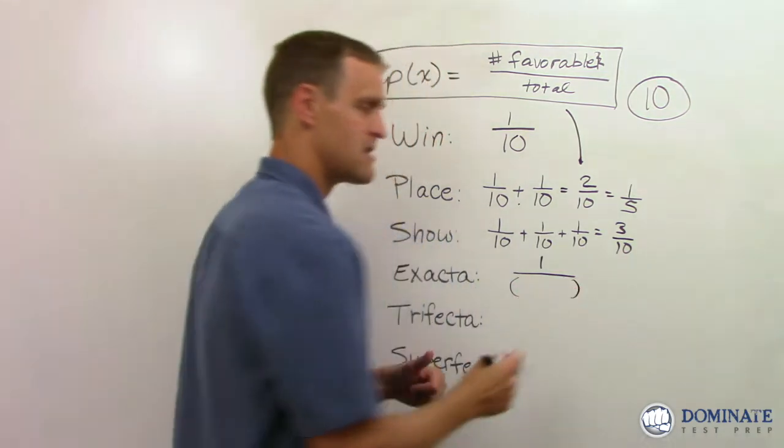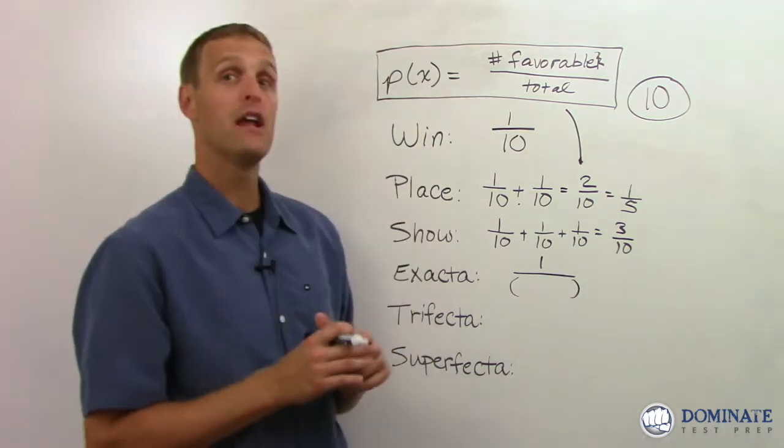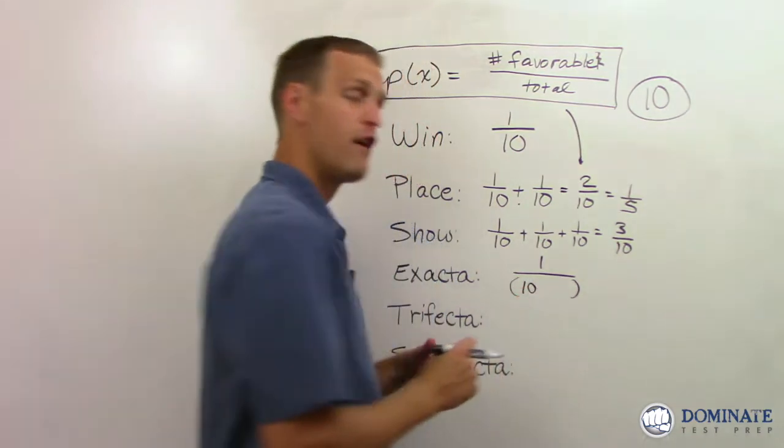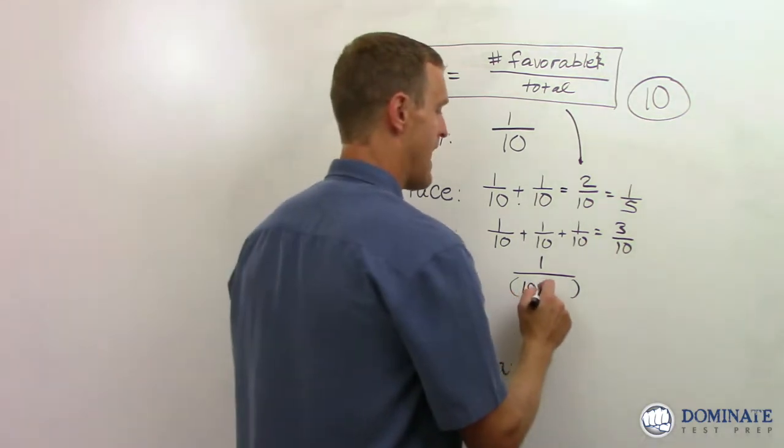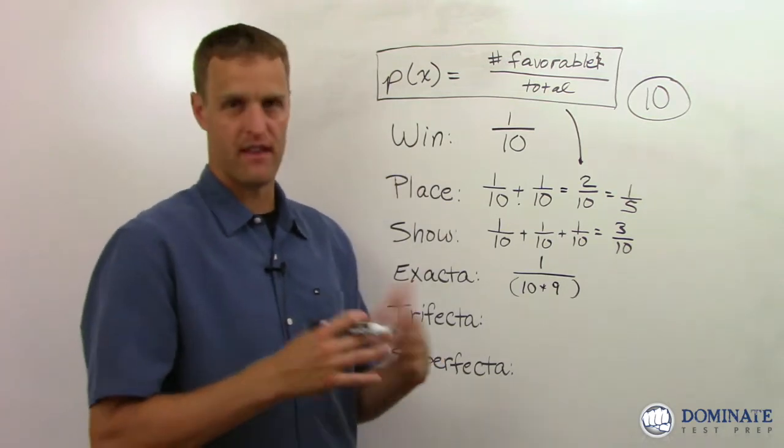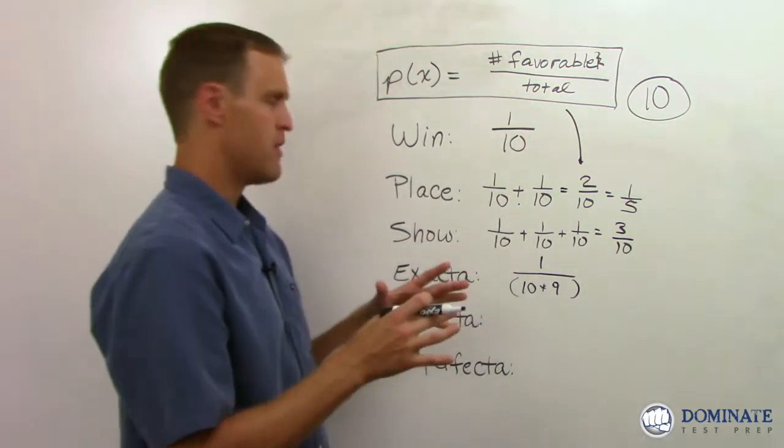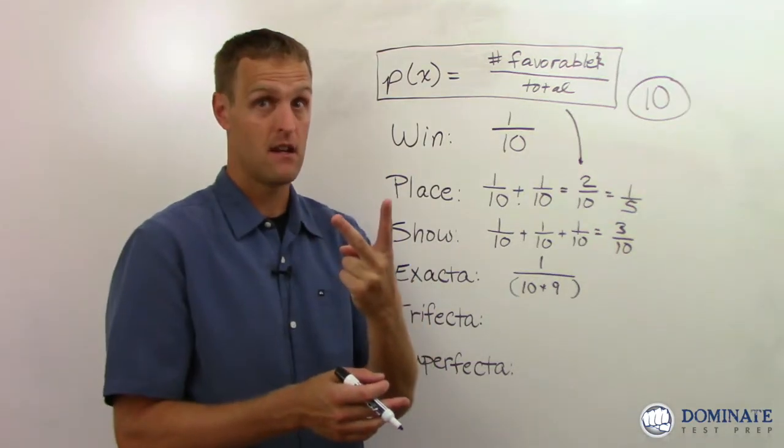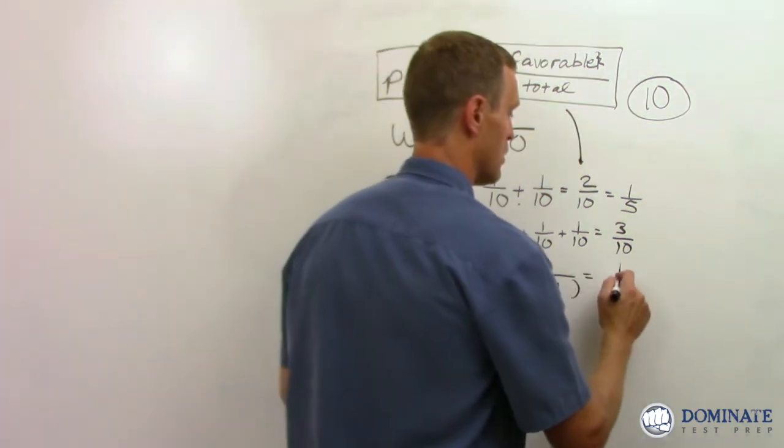And in the denominator, this now bleeds into the world of combinatorics. I'm not going to go too much into detail, but how many horses could actually finish first? 10. There are 10 horses that could finish first. Once that happens, how many could finish second? Only nine could finish second at that point. And so the total number of ways that 10 horses can finish first and second in a particular order is 10 times nine or 90 total ways.